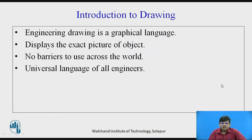As we all know, drawing is a language that engineers use to convey their ideas or to convey any diagram to a third person. It is a graphical language, the language of engineers. Drawing displays the exact picture of an object. If you want to convey something in a short manner, we go for drawings or signs — the symbols you see on roads, on automobiles, like a lights symbol or a horn symbol. These are all drawings that convey the exact picture of the object, conveying the exact idea without the use of words, and they convey it very easily.